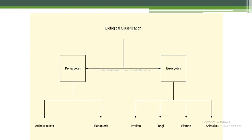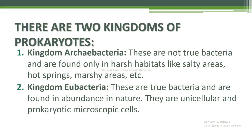There are two kingdoms of prokaryotes. The first is Archaebacteria — not true bacteria, found only in harsh habitats like salty areas, hot springs, and marshy areas. The second is Eubacteria — true bacteria, found in abundance in nature, unicellular, prokaryotic, and microscopic. There are four kingdoms of eukaryotes: Protista — single-celled eukaryotes with well-defined cell organelles; Fungi — non-vascular eukaryotic organisms with a true nucleus enclosed in a nuclear membrane; Plantae — eukaryotic chlorophyll-pigment containing organisms with a cell wall; and Animalia — heterotrophic eukaryotic organisms that are multicellular and lack cell walls.